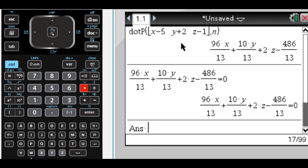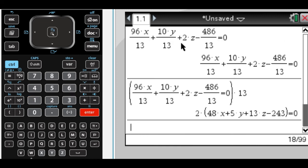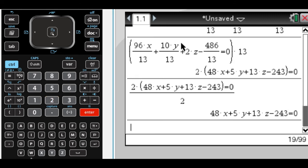And I know that that's going to equal 0. And that's actually the equation of the plane. You can clean it up by multiplying through by 13, and then divide by 2 to get this. So that's the equation of the plane.